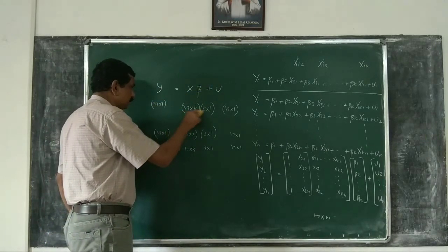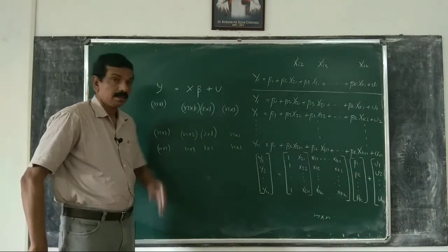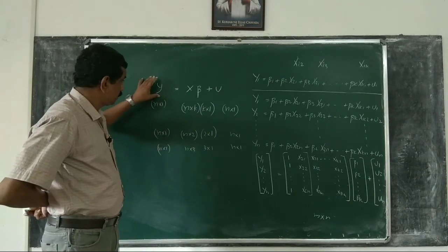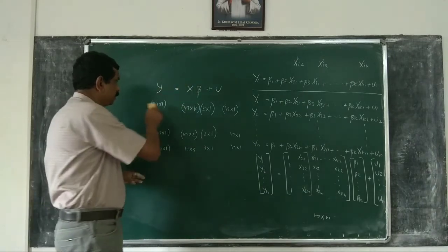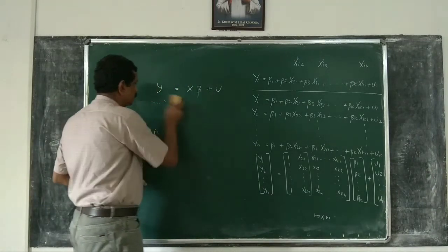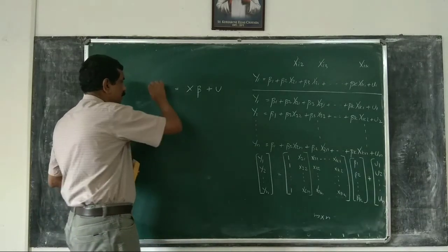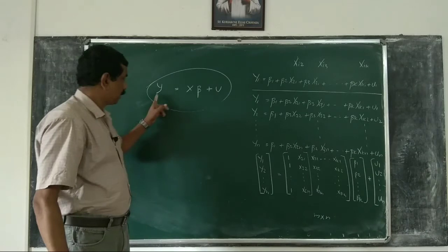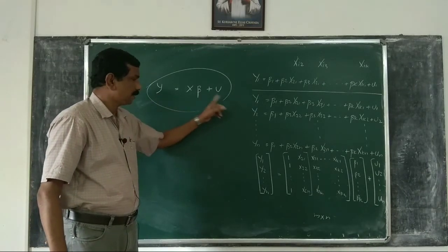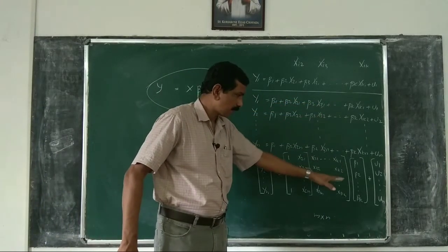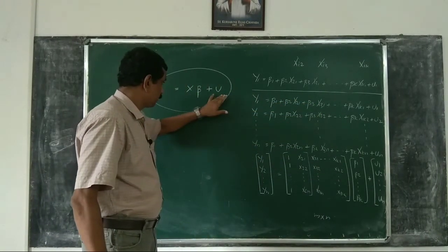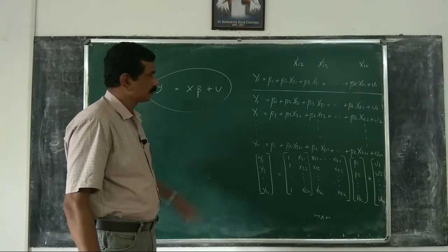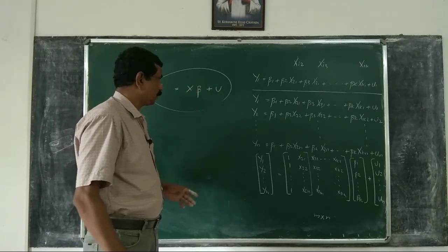So y equals X beta plus u is how we write a k-variable model in matrix form — whether it is a 2-variable model, a 3-variable model, or a general k-variable model. Always keep the dimensions in mind, because these dimensions will be used extensively in later classes. The order of y and u will always be the same; the number of columns of X and the rows of beta will change. Y is a vector, X is a matrix, beta is a vector, u is a vector.